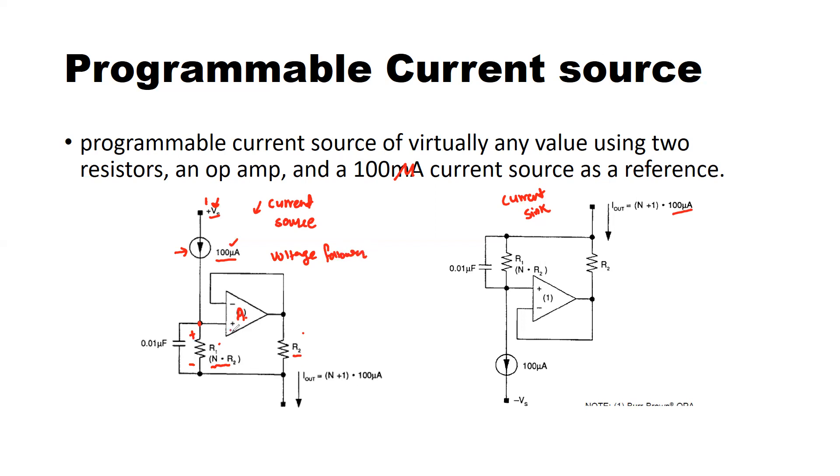At the positive input, the voltage across R1 that is generated due to this current source gets supplied here. Let's call it V1 and there is this voltage V2 over here. Since the gain of the amplifier is too large, it will try to minimize the difference between V1 and V2 to a value close to 0.